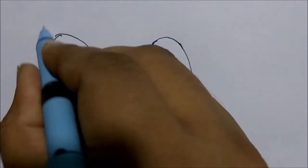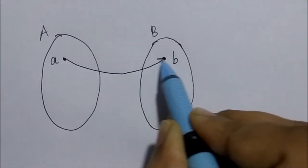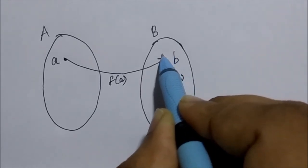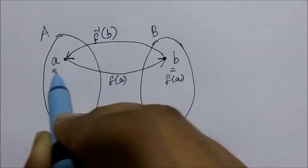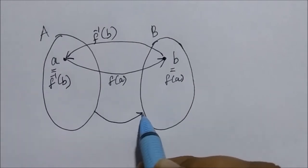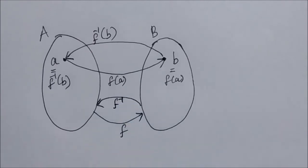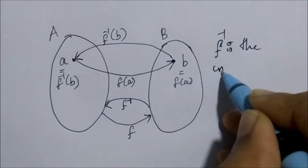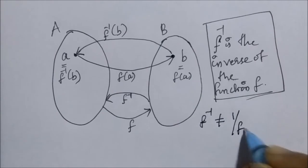f is the function from set A to set B, so element a in A is mapped to element b in B by f, meaning f(a) = b. f⁻¹ maps from set B to set A, assigning element b in B the value a in A, so f⁻¹(b) = a. Note that f⁻¹ (f raised to minus one) is different from 1/f(x), which is another function.